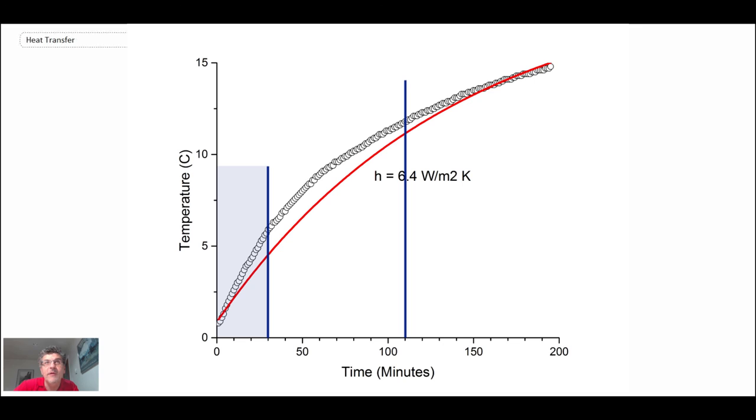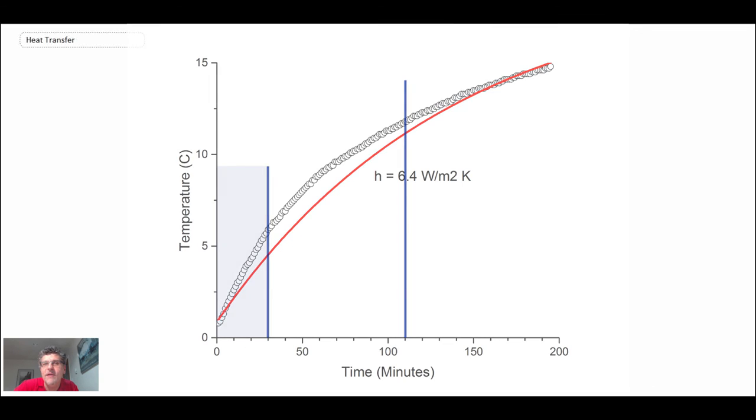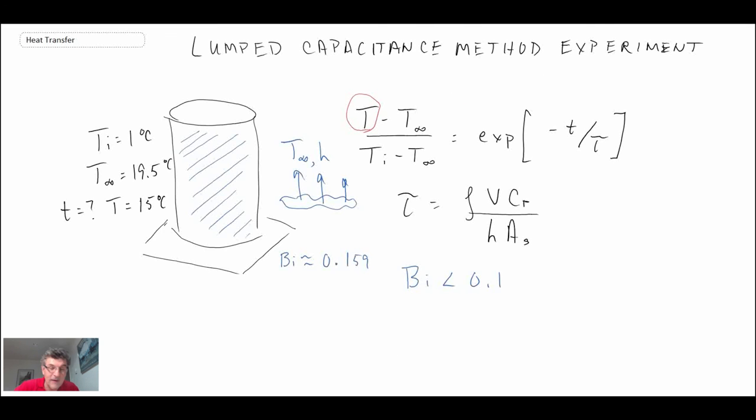What that tells us is the number we had with the Biot number being a little bit greater than 0.1 is kind of validated by this experiment. It shows that the lumped capacitance technique is not perfect for this particular application, mainly because the object we're looking at is a fluid. We know fluids can have all kinds of convective processes inside of them. Usually you'll want to have that inside of a solid. That is an example of the lumped capacitance technique being investigated experimentally.